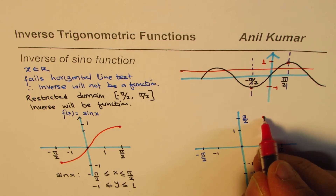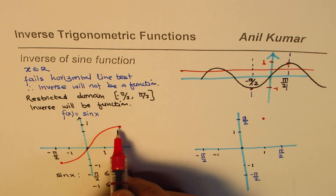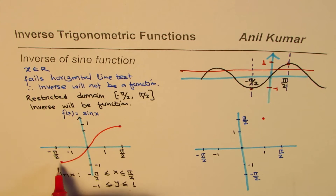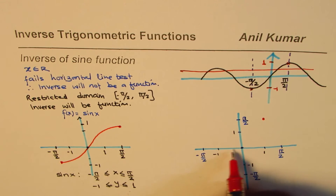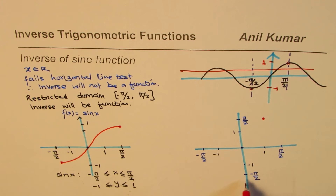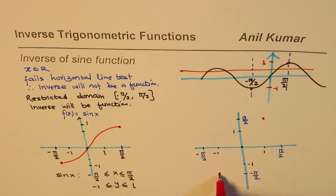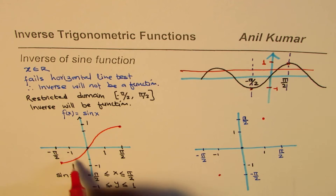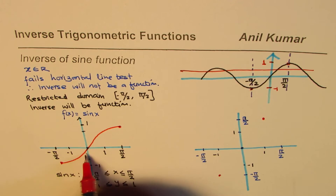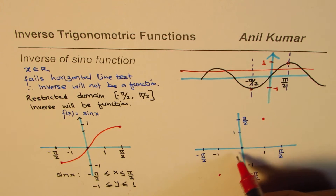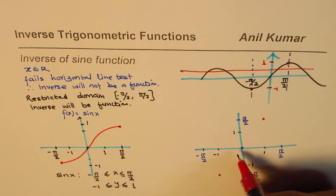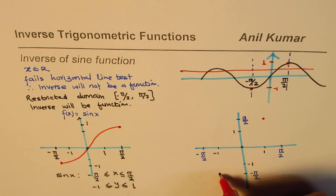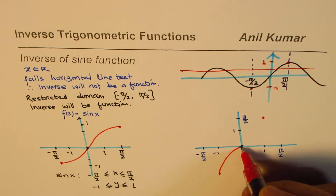Pi by 2 will be the corresponding point. This point here is minus pi by 2, minus 1, so the inverse will be minus 1, minus pi by 2. Likewise, if you flip all these points you'll get the inverse. And the inverse will look like this when you sketch it — this is sine inverse x.